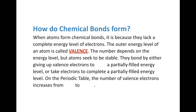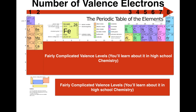Atoms bond by doing either one of two things: they either give up valence electrons to lose a partially filled energy level, or they take electrons in order to fill it. On the periodic table, the number of valence electrons generally increases from left to right. For our purposes in sixth grade, we're only going to look at the first 20 elements on the periodic table.